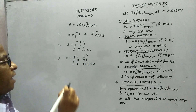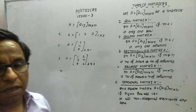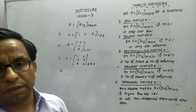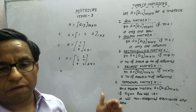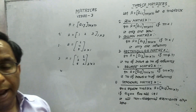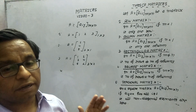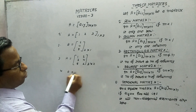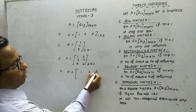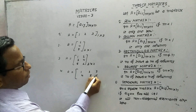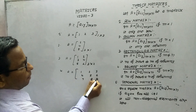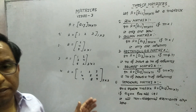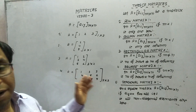Next is square matrix. In a square matrix, M is always equal to N — that is, the number of rows equals the number of columns. This is a very important type of matrix. Example: A = [1,2,3; 4,5,6; 7,8,9]. This is a 3 by 3 matrix, so it is a square matrix.